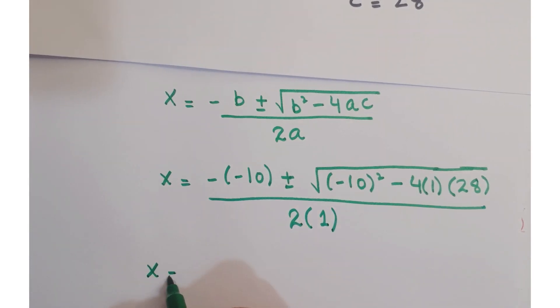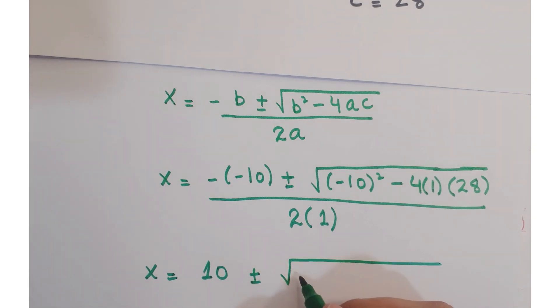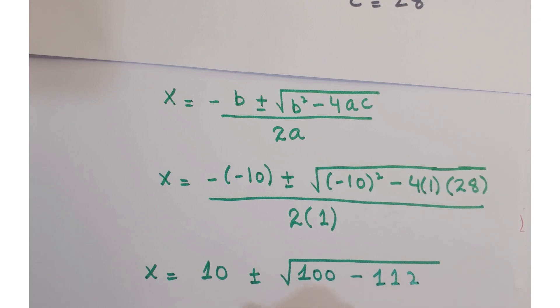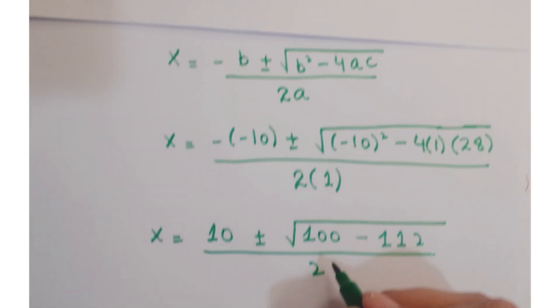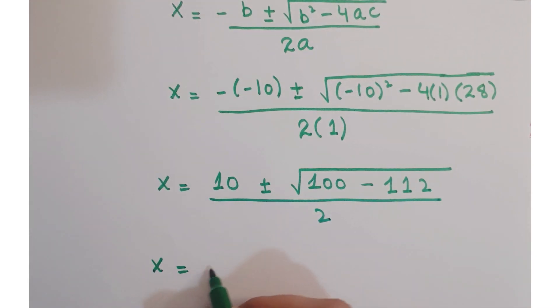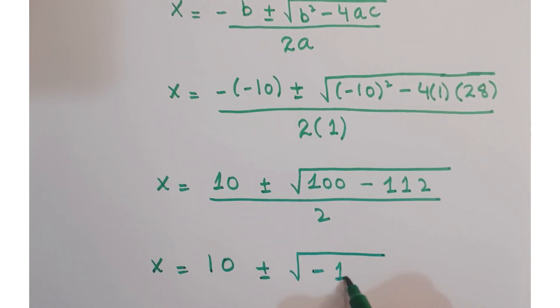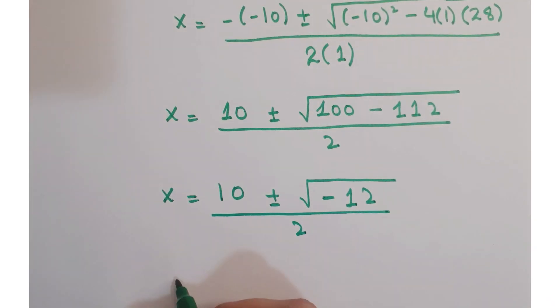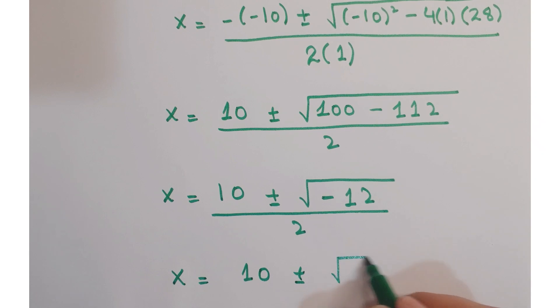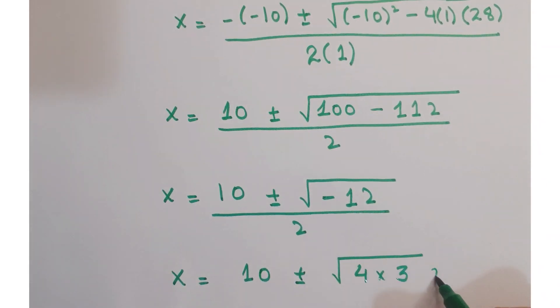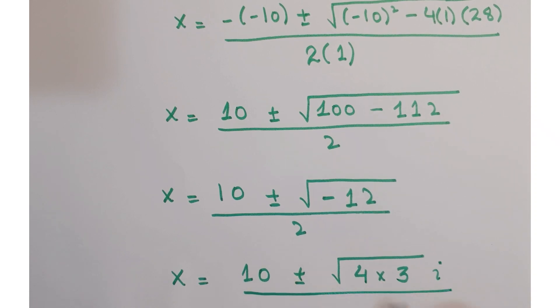So here we get 10 plus minus this is 100 minus 112 upon 2. You can write it as x equals 10 plus minus, here you get minus 12 upon 2, or you can write it as 10 plus minus this 12 can be written as 4 into 3 and due to this minus sign we get i here upon 2.